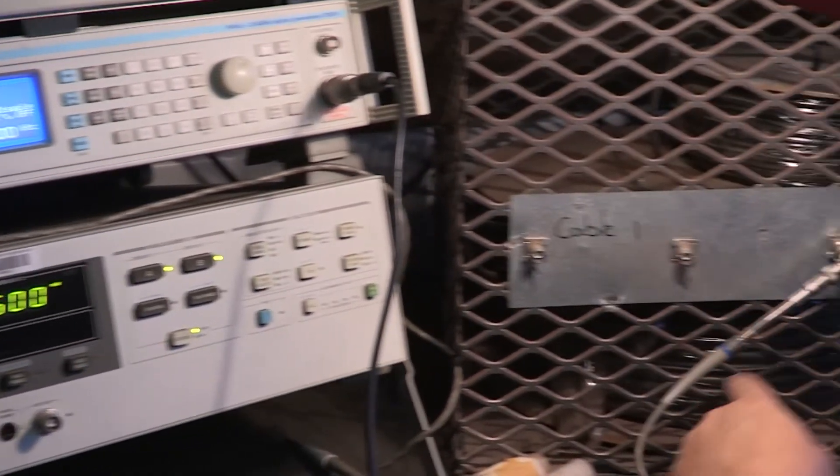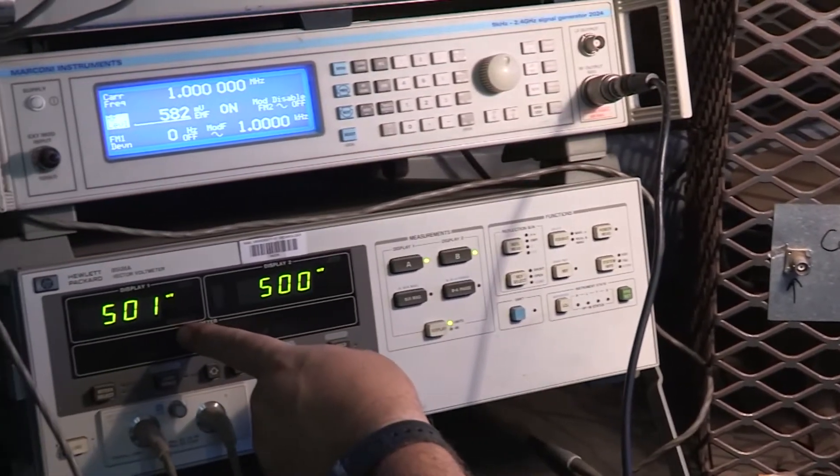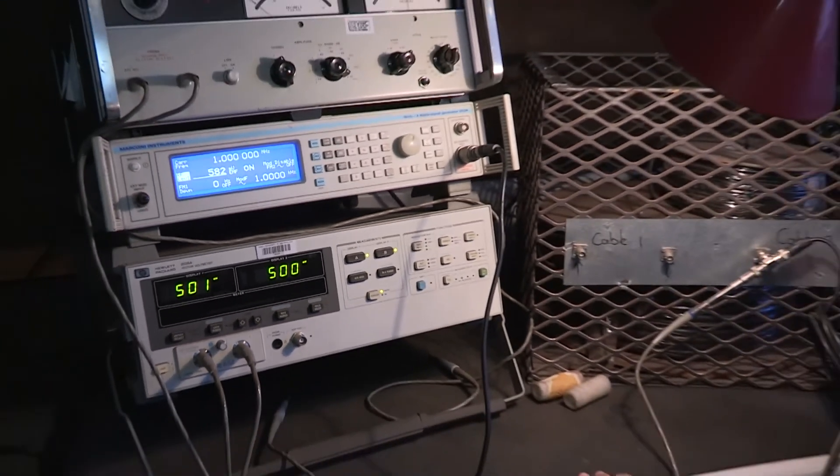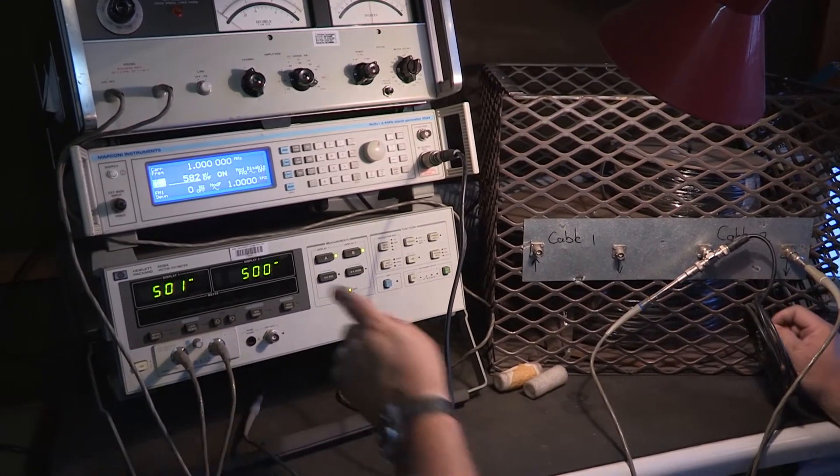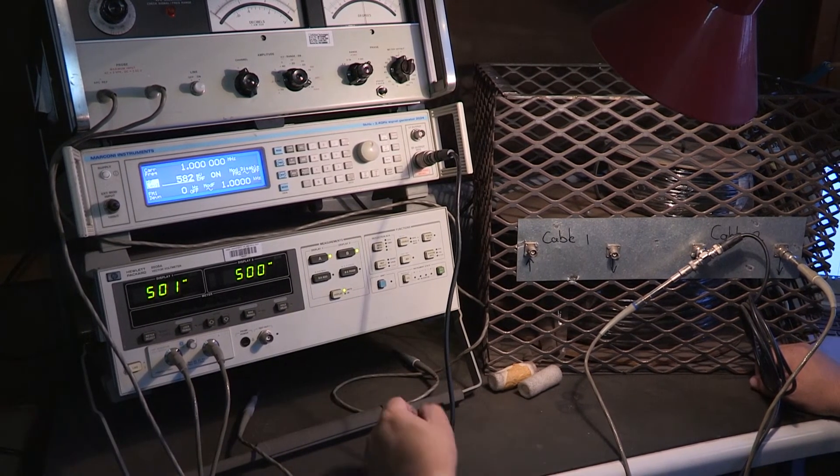Setup: basic signal generator. Generate signal goes into the cable. It's also measured by the vector voltmeter showing me channel A at about 500 millivolts. The output, the result from the cable is then on channel B. And that is exactly the same. So now that we know the setup works.